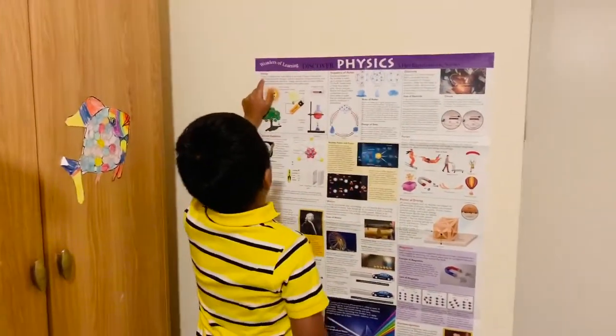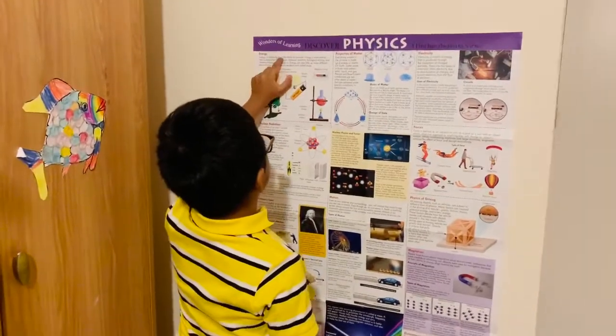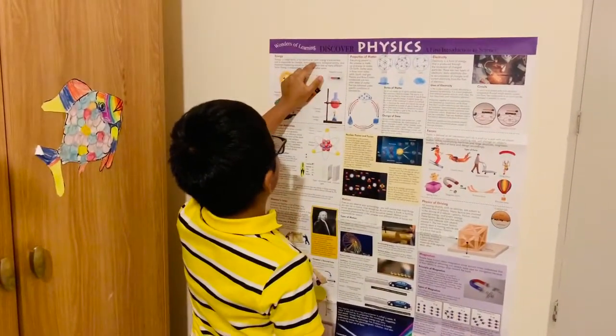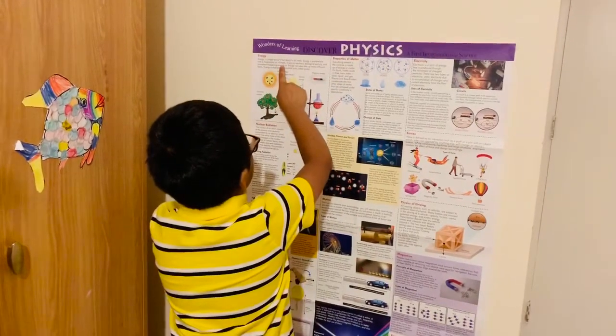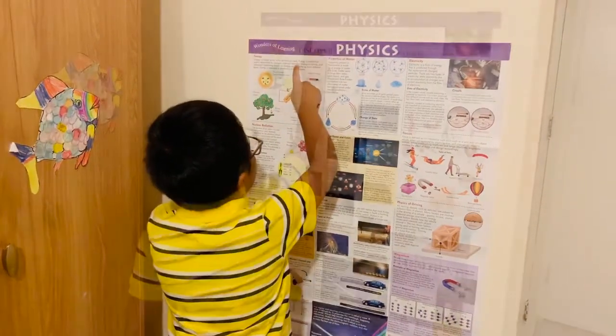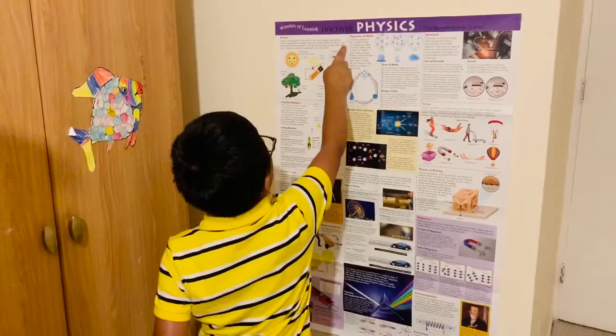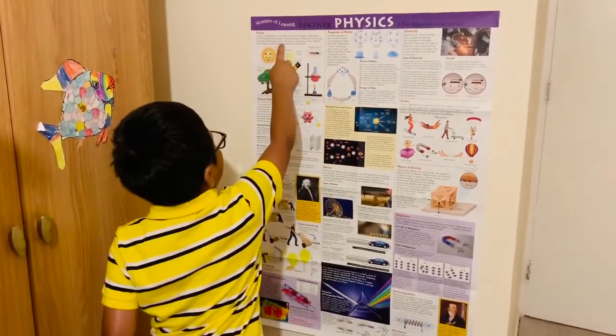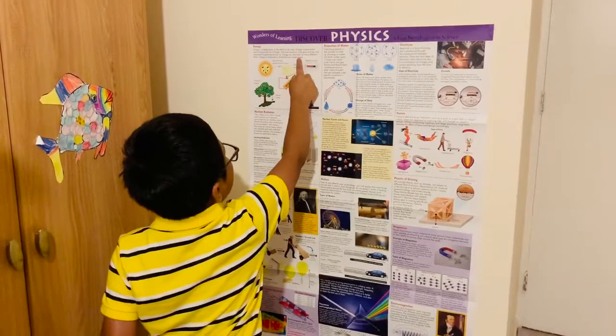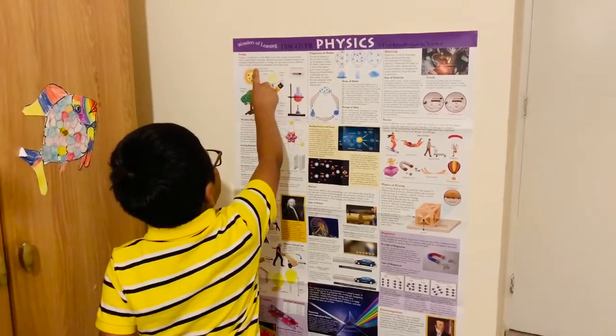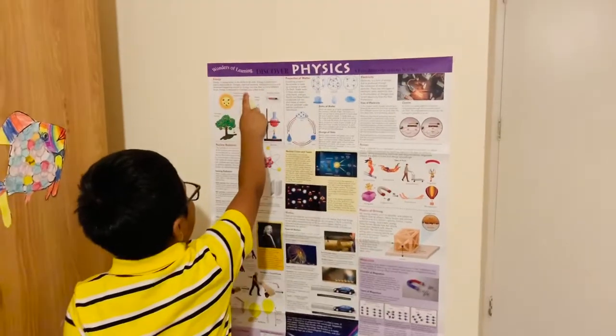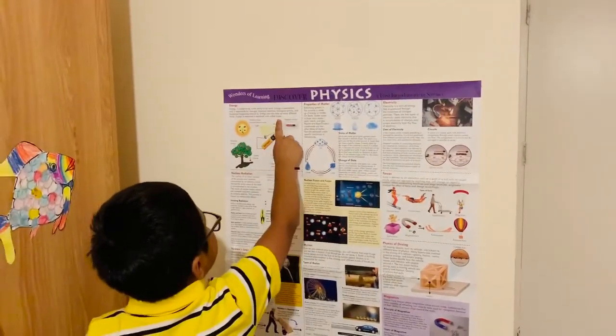Energy. Energy in simple terms is the ability to do work. Energy is everywhere and is responsible for changes, chemical reactions, biological activity, and movement happening around us. Energy can also take up many different forms. Energy is measured in standard units called joules.